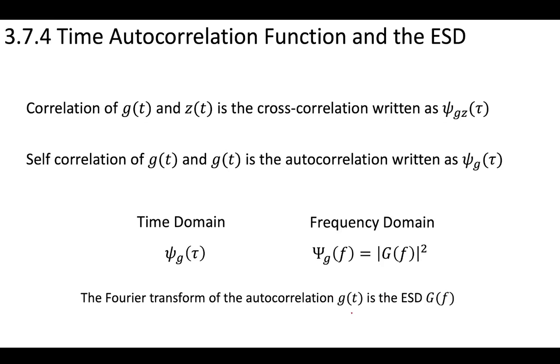So another way to put this is if you have a signal, you perform the autocorrelation, then you take the Fourier transform, what you end up with is the energy spectral density of your original signal. So you have this relationship between autocorrelation and the energy spectral density.